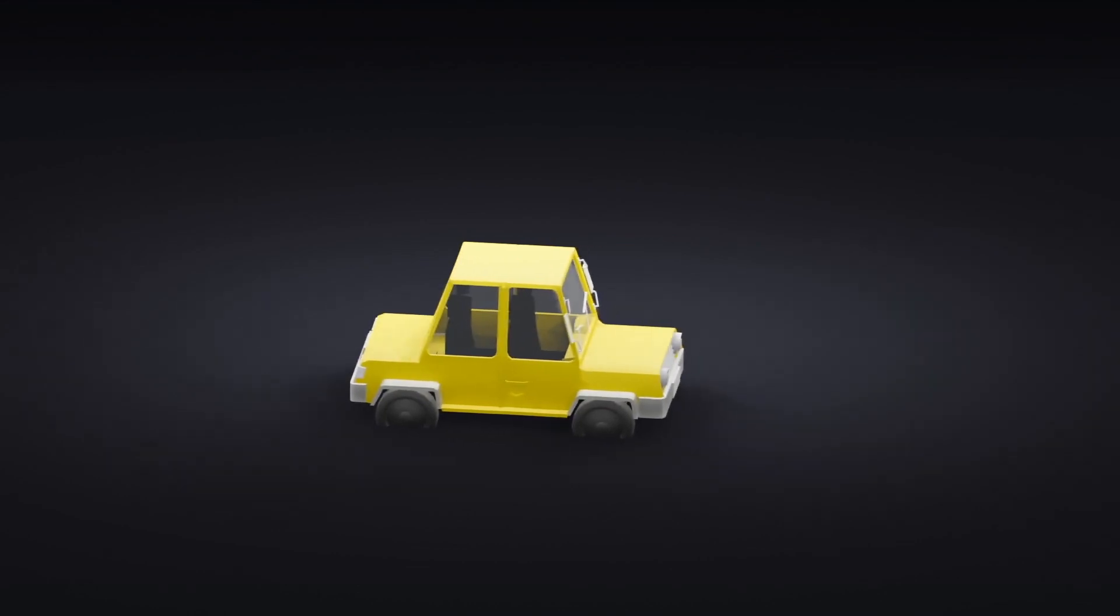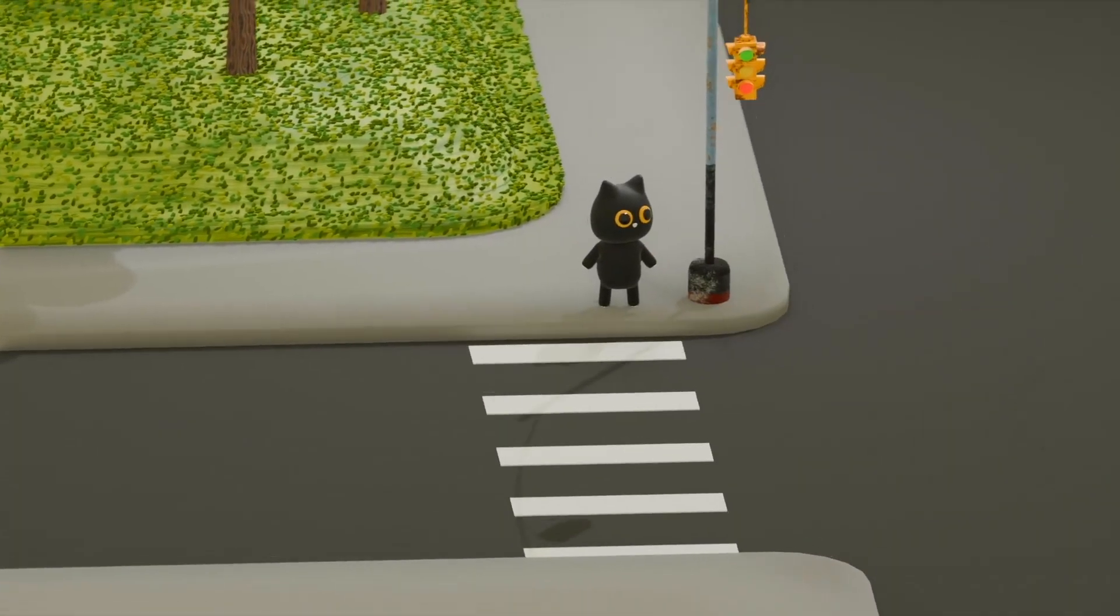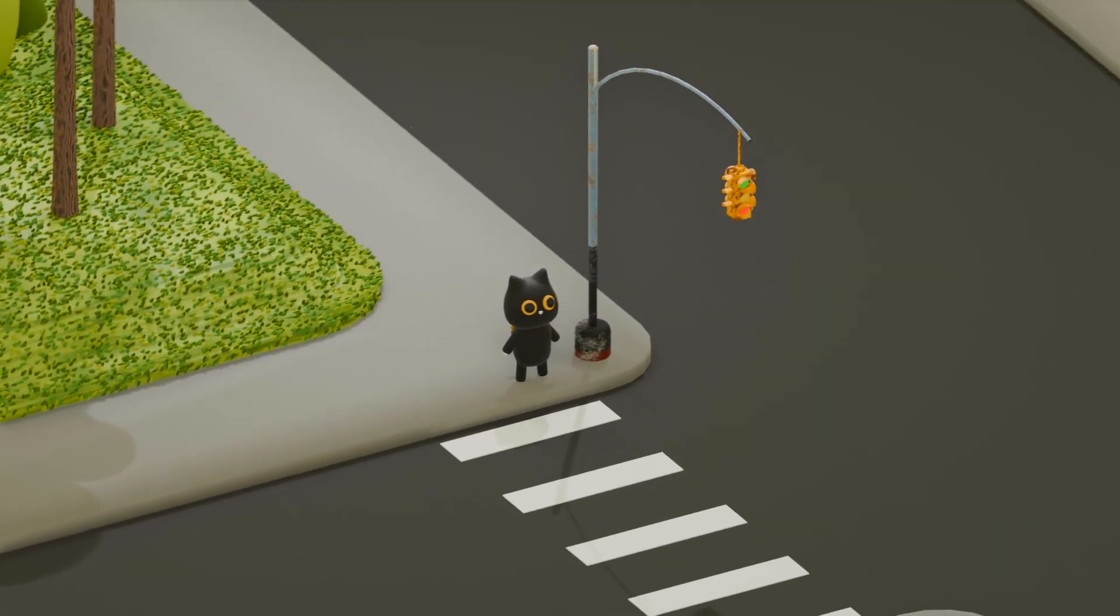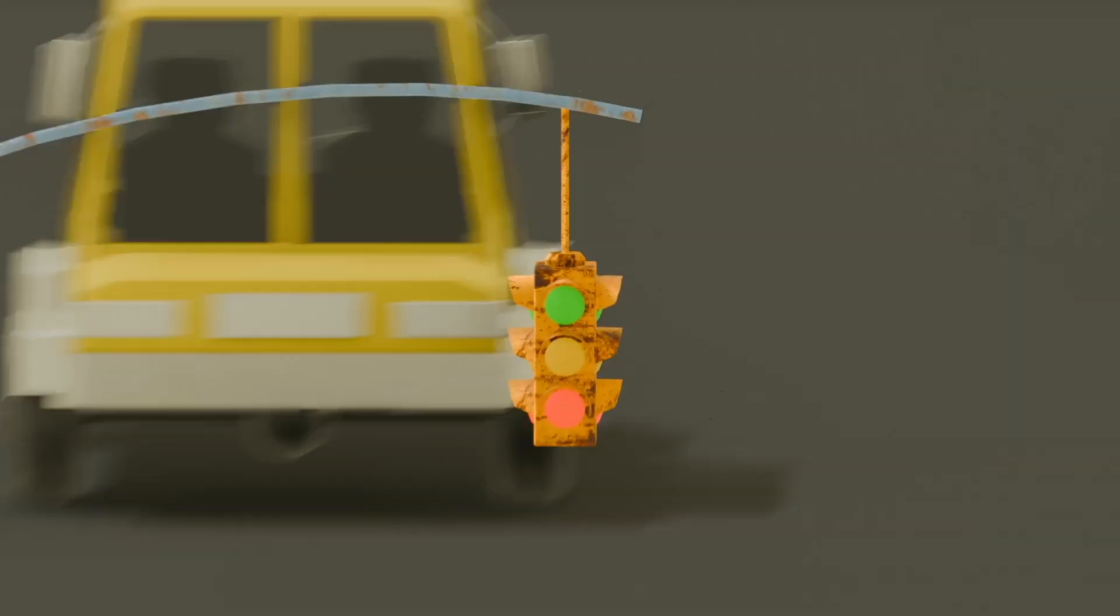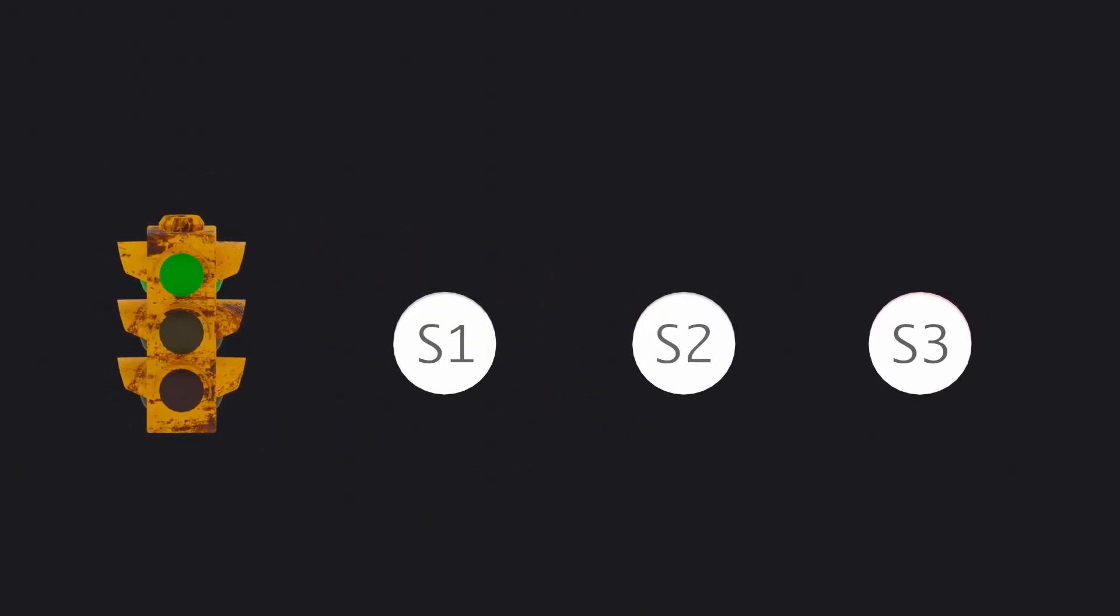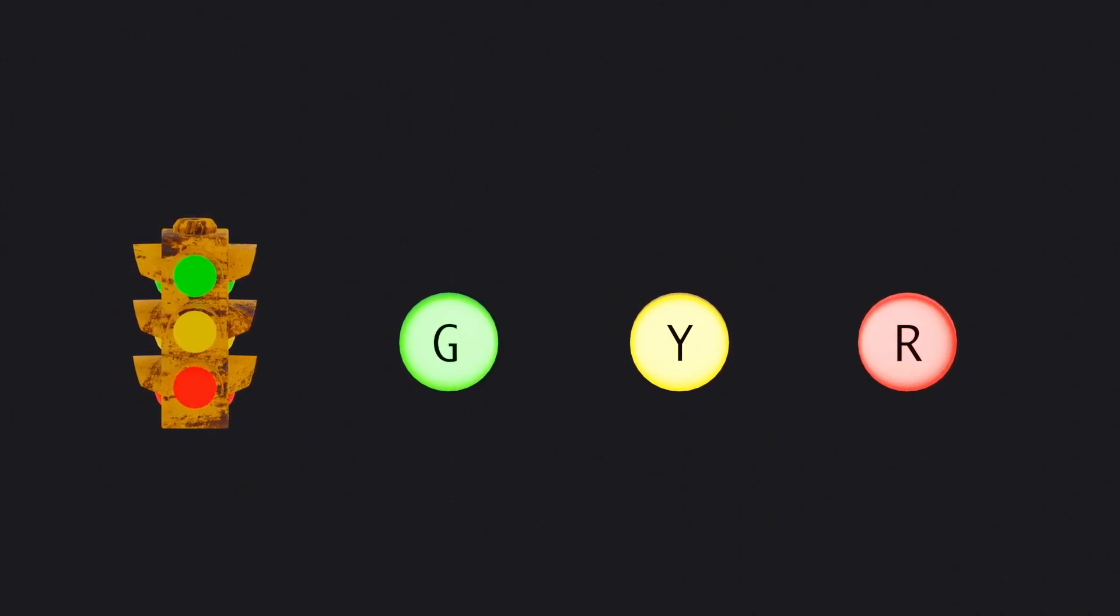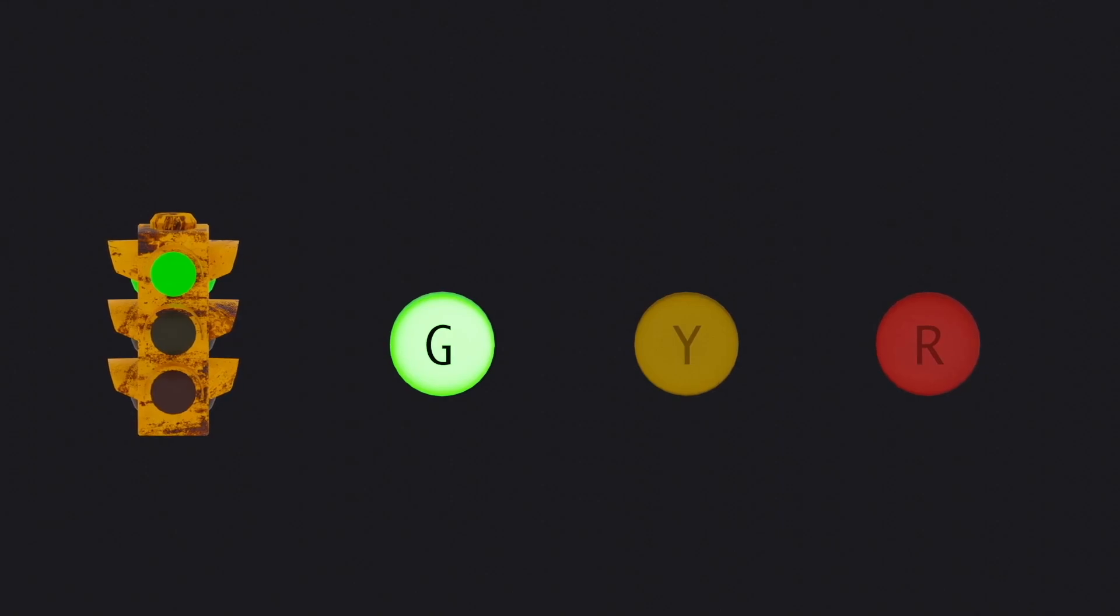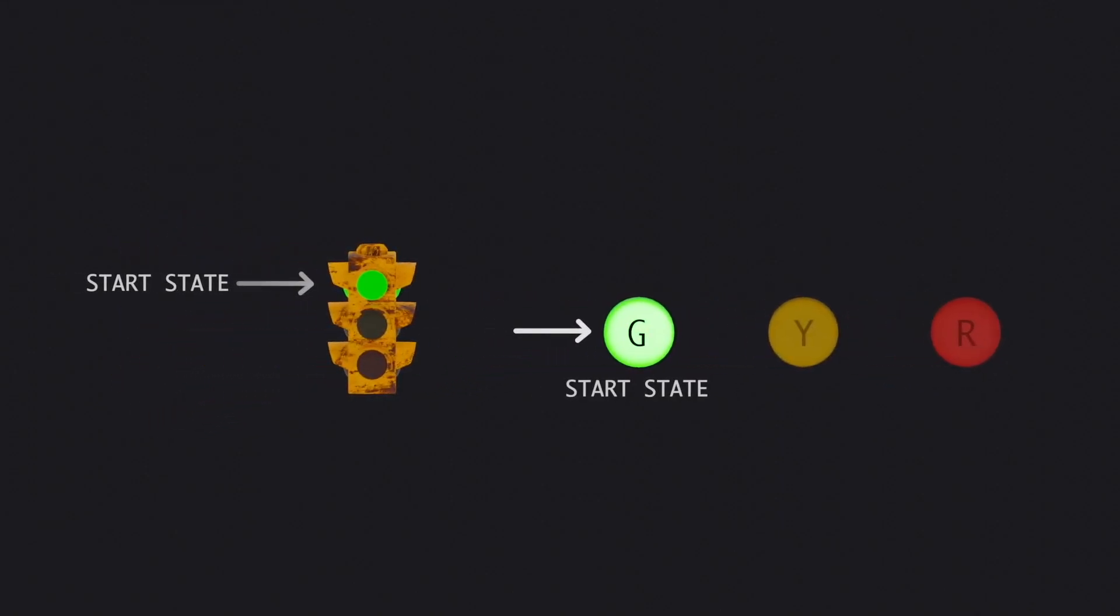Let's start off with an example using a traffic light. Imagine a brand new traffic light that is installed at this cross junction. This traffic light has three states. It can either be green, yellow, or red. Upon installation, it starts off green.